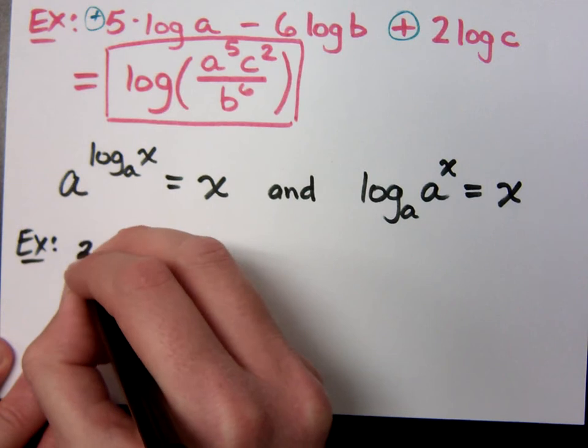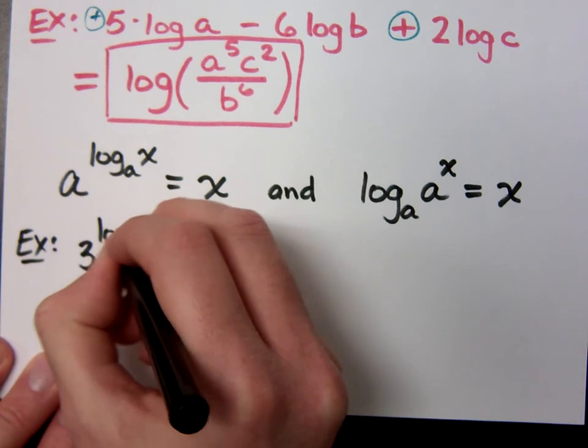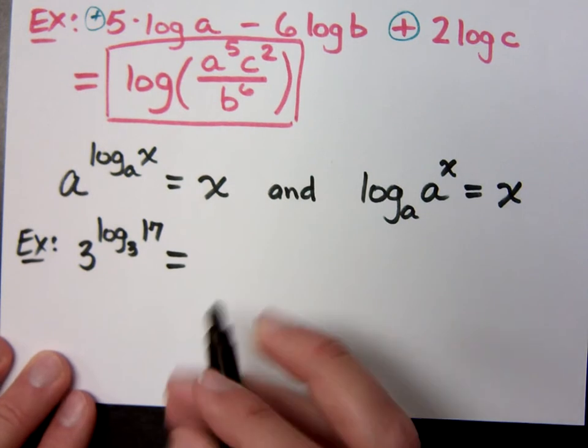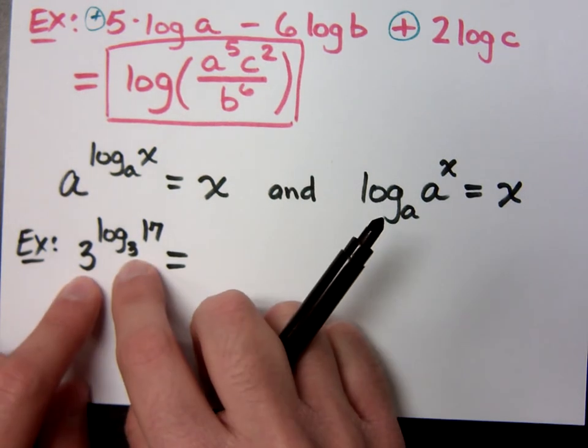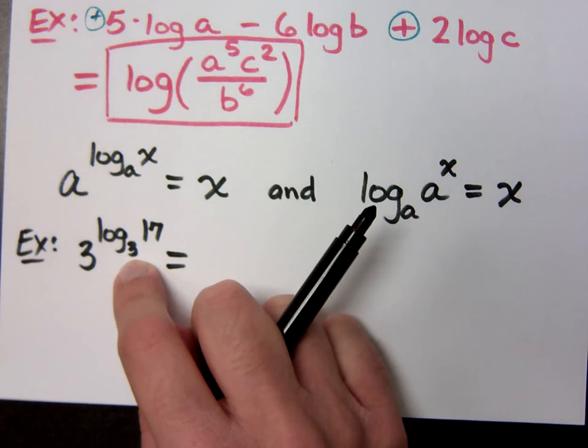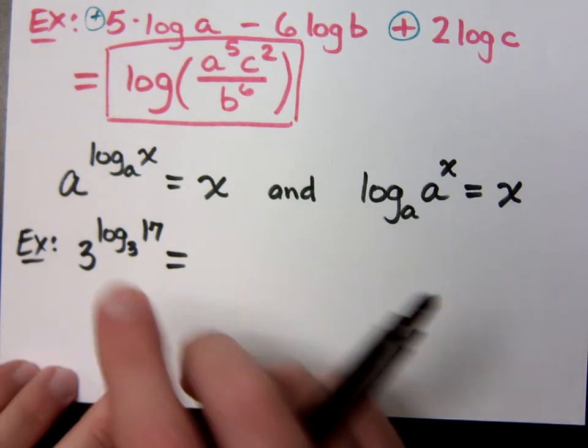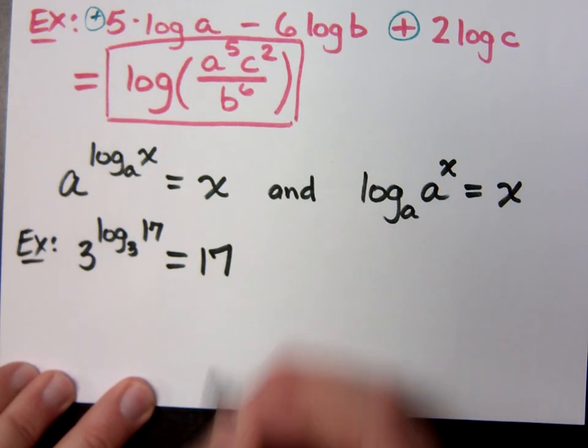If I have 3 raised to the log base 3 of 17, the bases are the same, right? So log cancels out the exponent. The exponent cancels out the log. So what's my answer? 17.